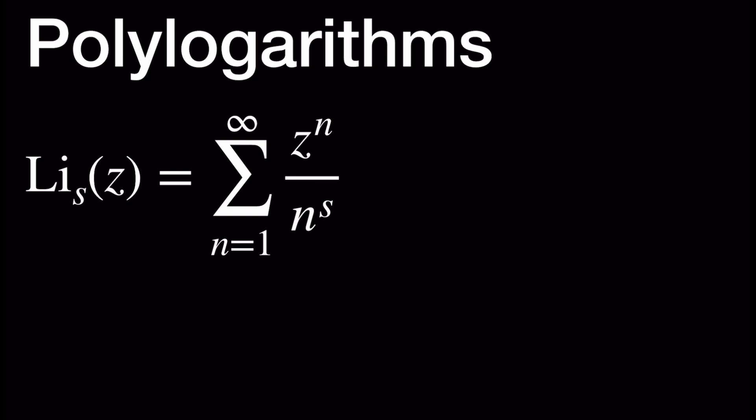Now, we want to know when the series is convergent. Using the ratio test, we're going to see that the series is convergent for the modulus of Z less than 1. So it's going to be convergent inside the open disk centered at 0 with radius 1.